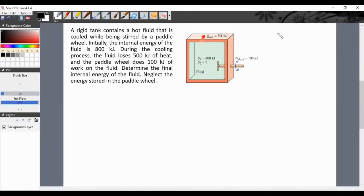So from the problem, these are the given values. We have initial internal energy U₁ = 800 kilojoules, heat loss of 500 kilojoules, and paddle wheel work of 100 kilojoules. Required: